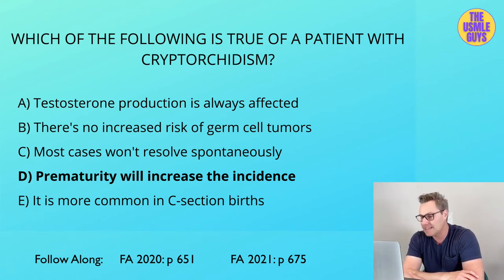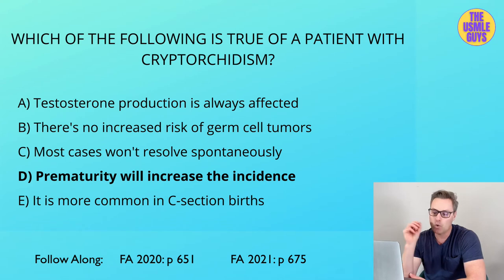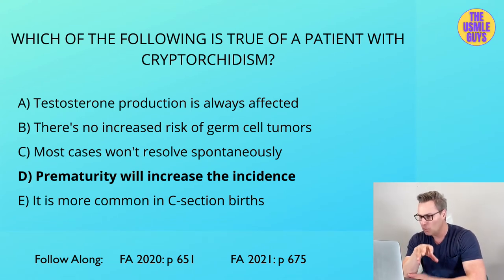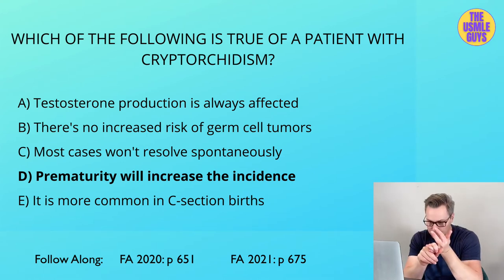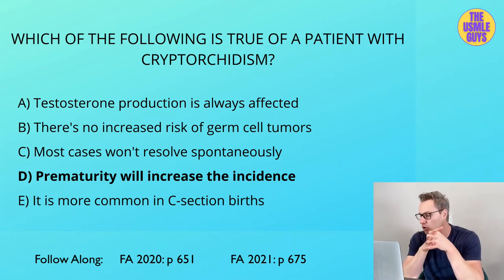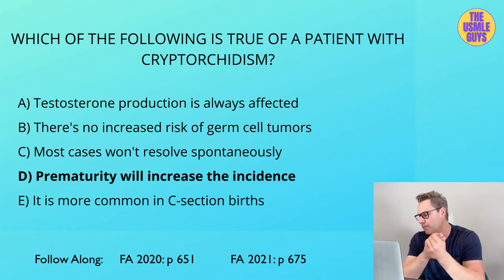One thing to watch for in a vignette is whether someone was born prematurely, because that is a big risk factor. Also remember that cryptorchidism is associated with an increased risk of germ cell tumors. The hormone levels you should expect to see are a decrease in inhibin B — since Sertoli cells secrete inhibin B, which inhibits FSH — and thus an increased FSH. If bilateral, testosterone would likely be lowered, meaning LH would also be elevated. Most cases resolve on their own, but if they don't, we perform an orchiopexy before two years of age.